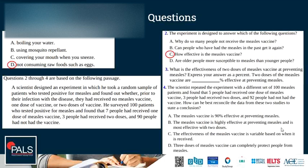Question three is about vaccine effectiveness. What is the effectiveness of two doses of measles vaccine at preventing measles? Express your answer in percent. Two doses of measles vaccine are 97% effective at preventing measles. How do we get to 97%? Three people out of 100 who tested positive had received two doses, meaning the vaccine is 97% effective at preventing measles.